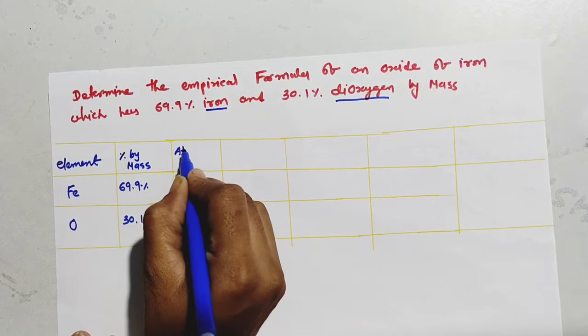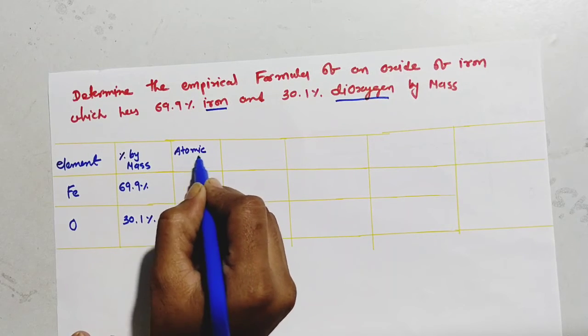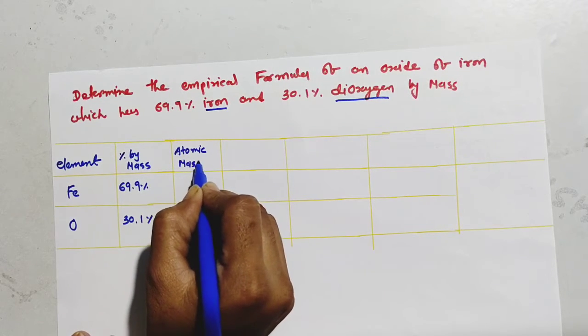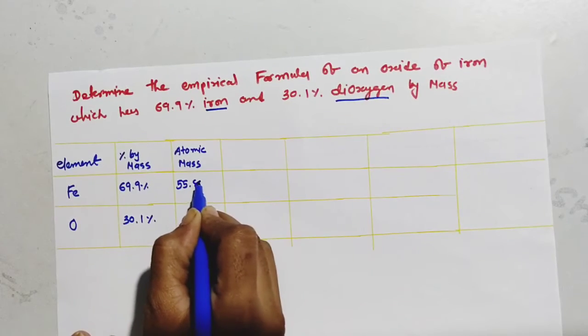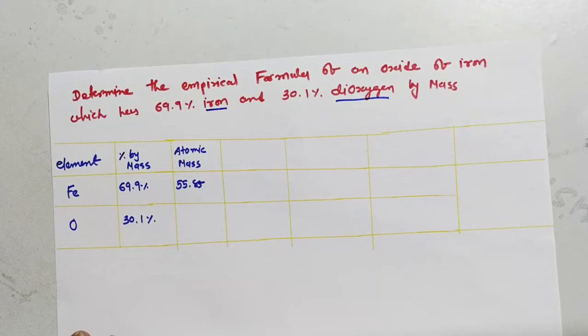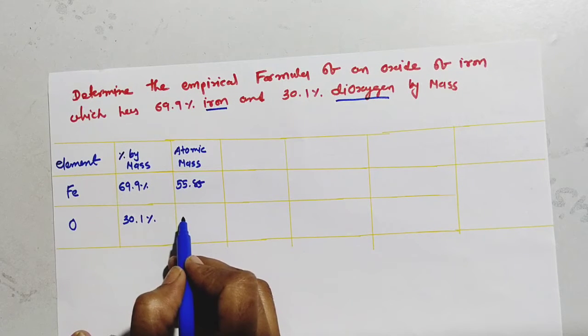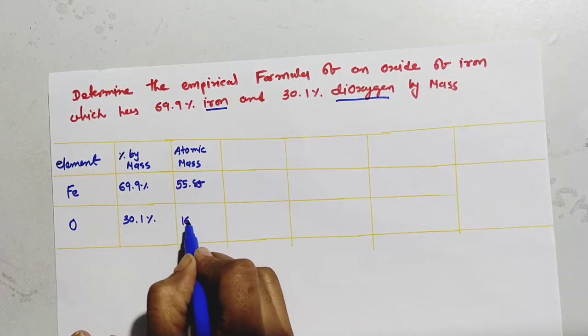Now, another column is atomic mass. Fe atomic mass is 55.85 and oxygen is 16.